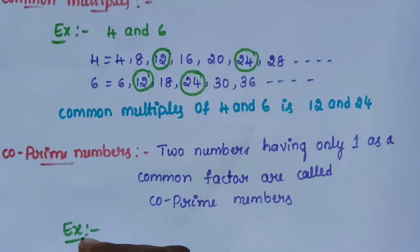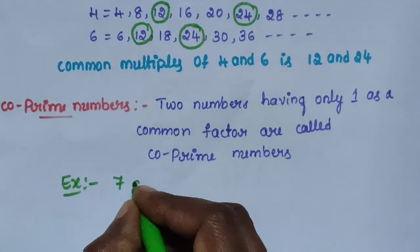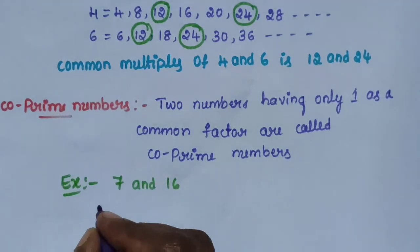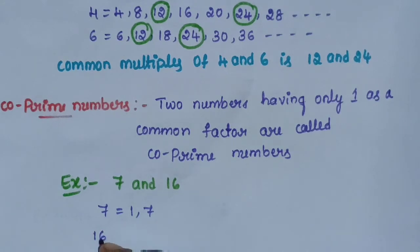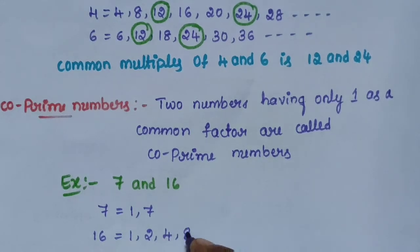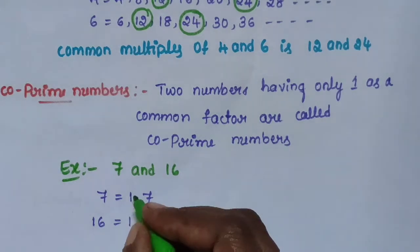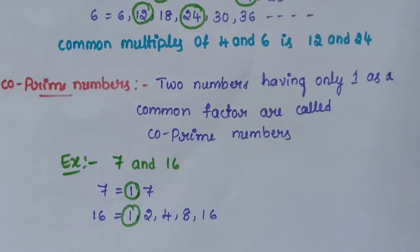The factors of 7 are 1 and 7. The factors of 16 are 1, 2, 4, 8, 16. Since these two numbers have only 1 as a common factor, they are called co-prime numbers.